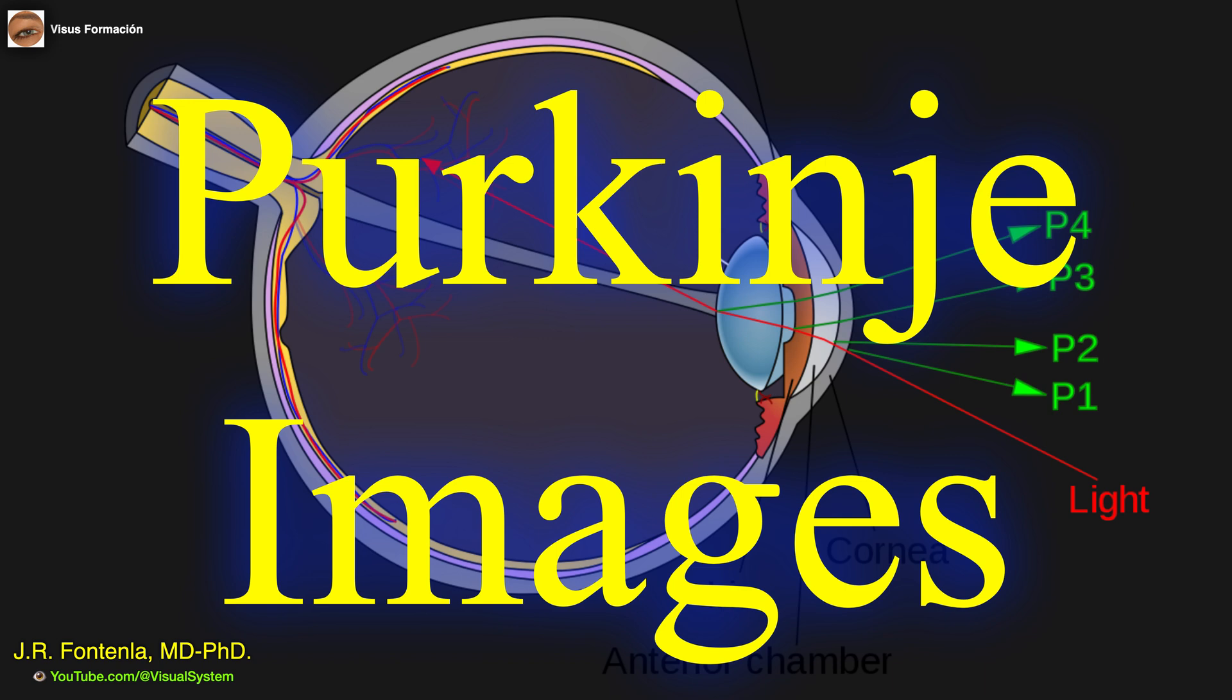Purkinje images are reflections of light, especially infrared light, which can be seen on various ocular anatomical structures.